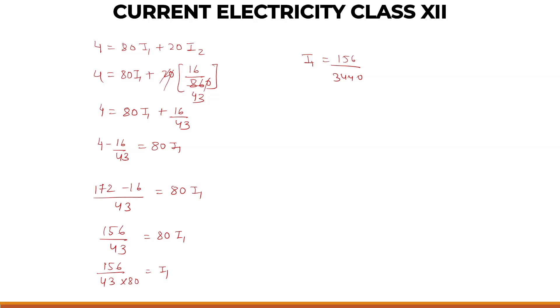Now this is our I1. Let's simplify in decimals because they are huge values. So let me divide 156, that will be nearly 0.045 ampere. That's our current I1.